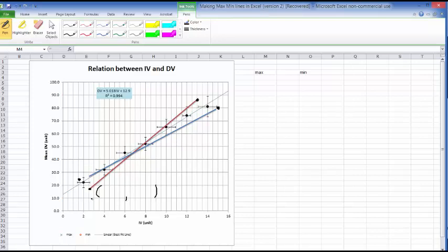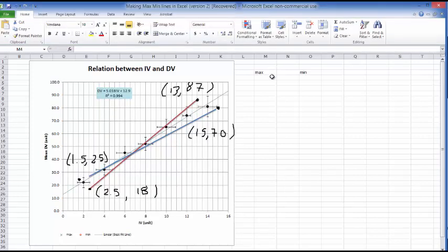Now, I'm just going to quickly note what those points are, read them off the graph. This first one is 2.5, 18 or so.